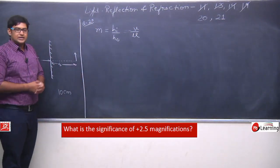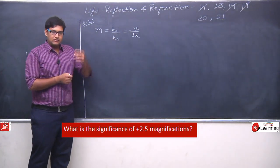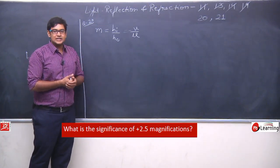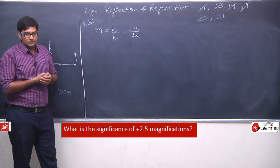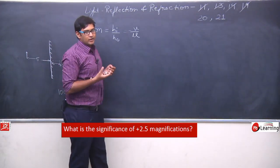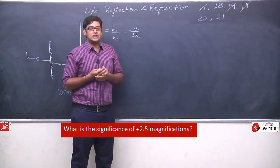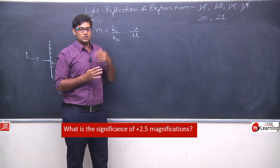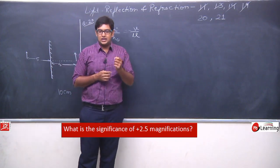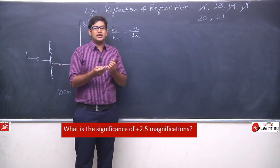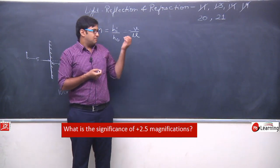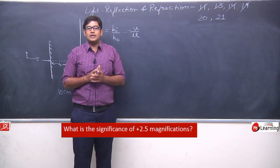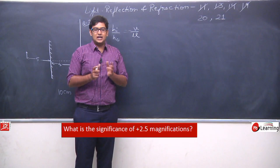Let us try to understand this formula. We discussed it when we covered the mirror formula. The sign of magnification — positive or negative — tells us about the type of mirror or the position of the object. When magnification is positive or negative, it corresponds to different types of mirrors and different object positions.